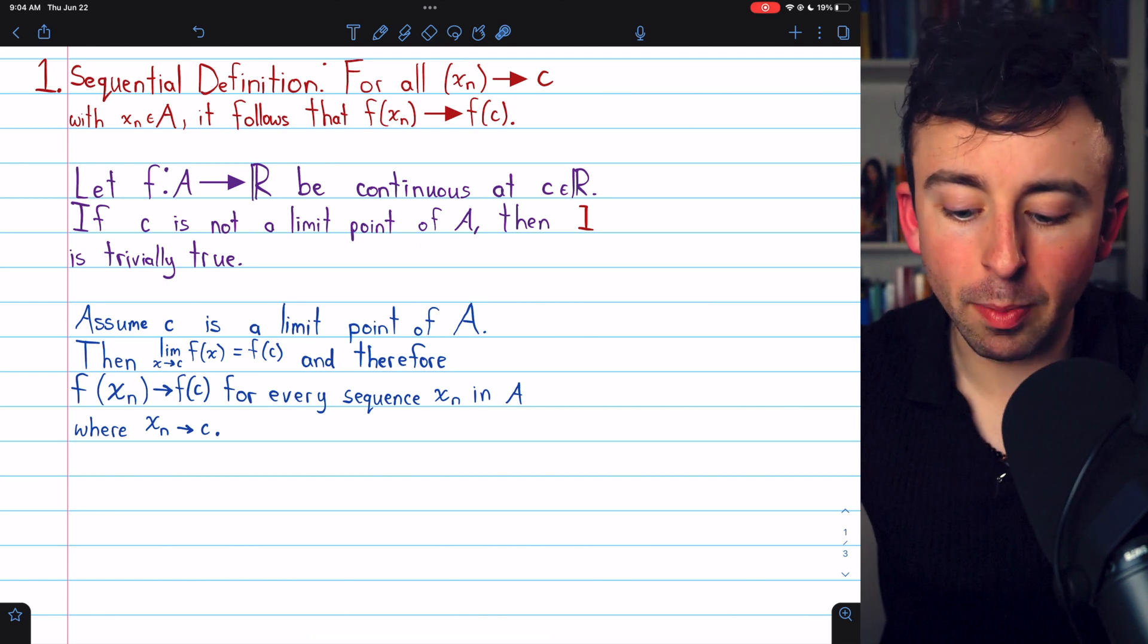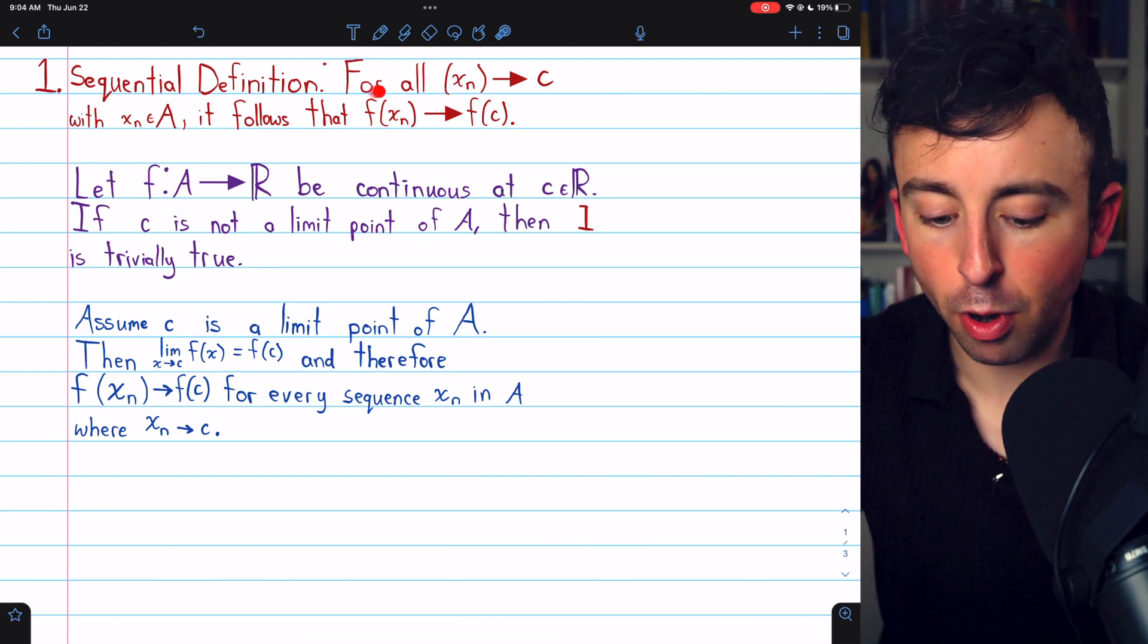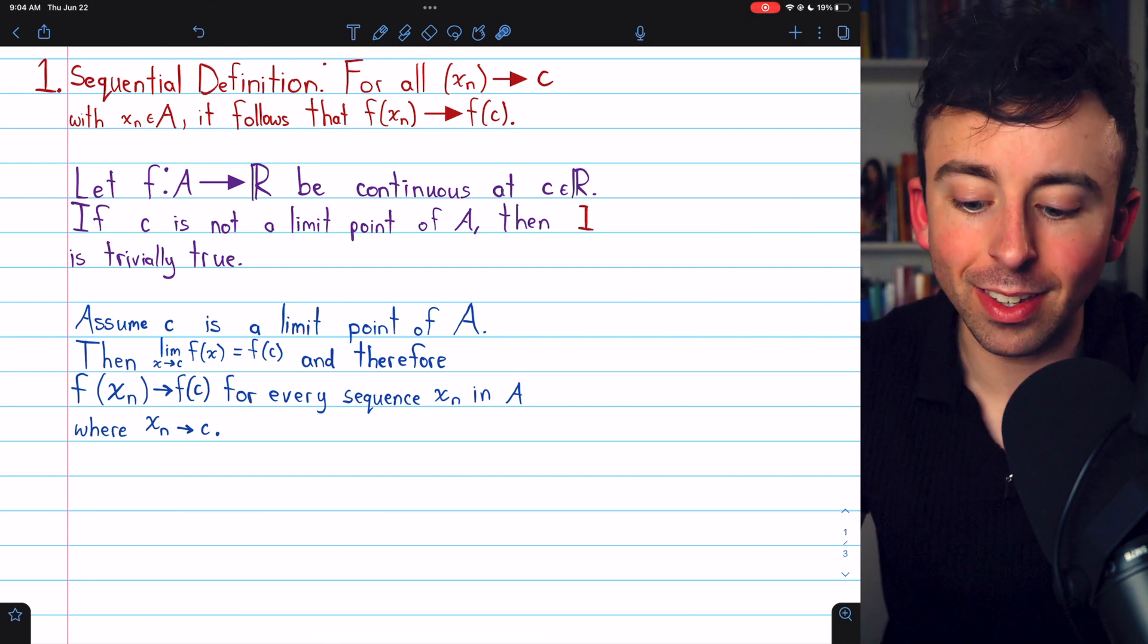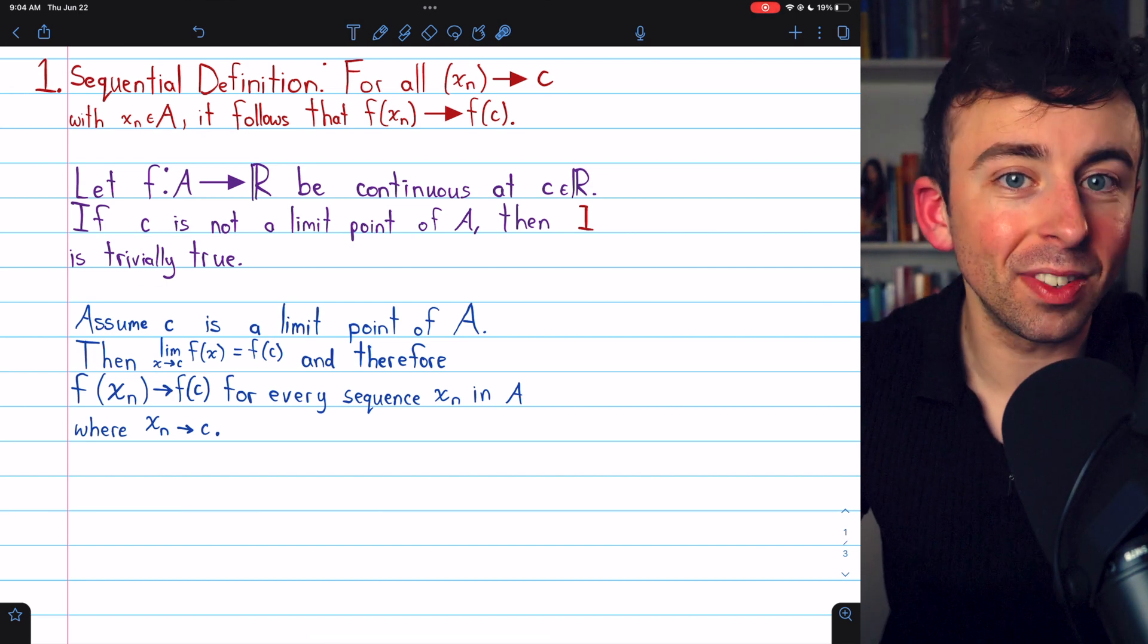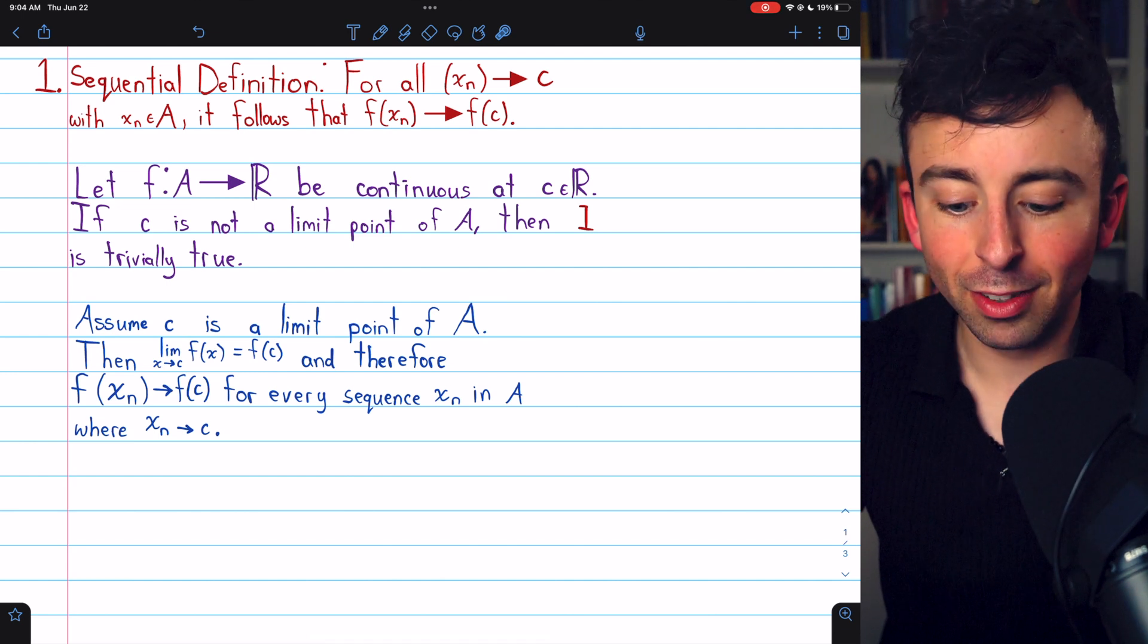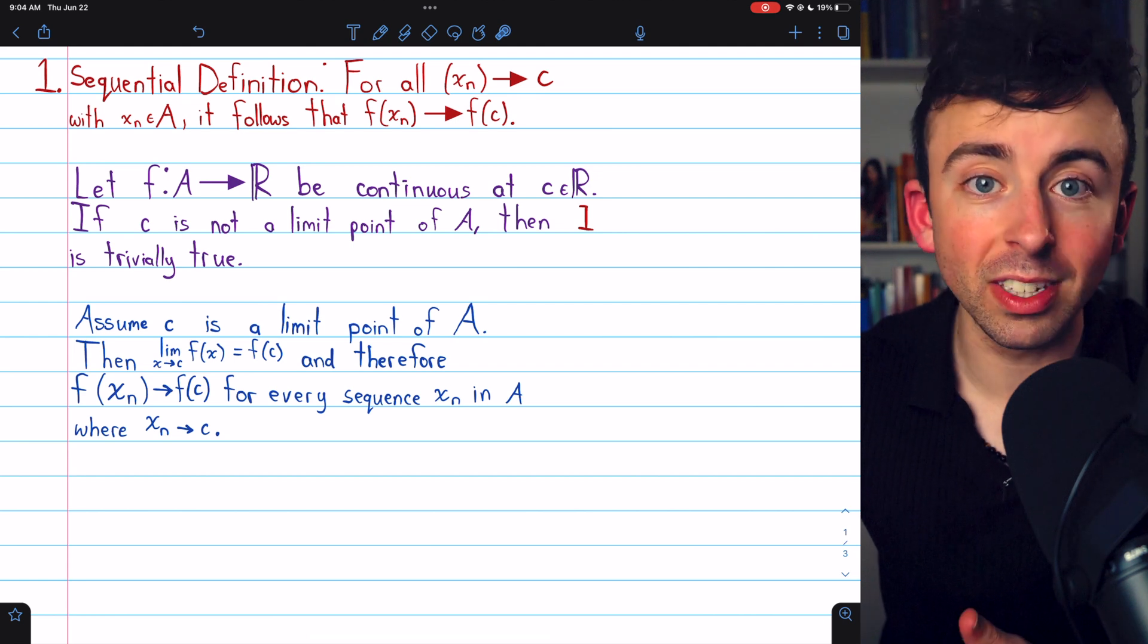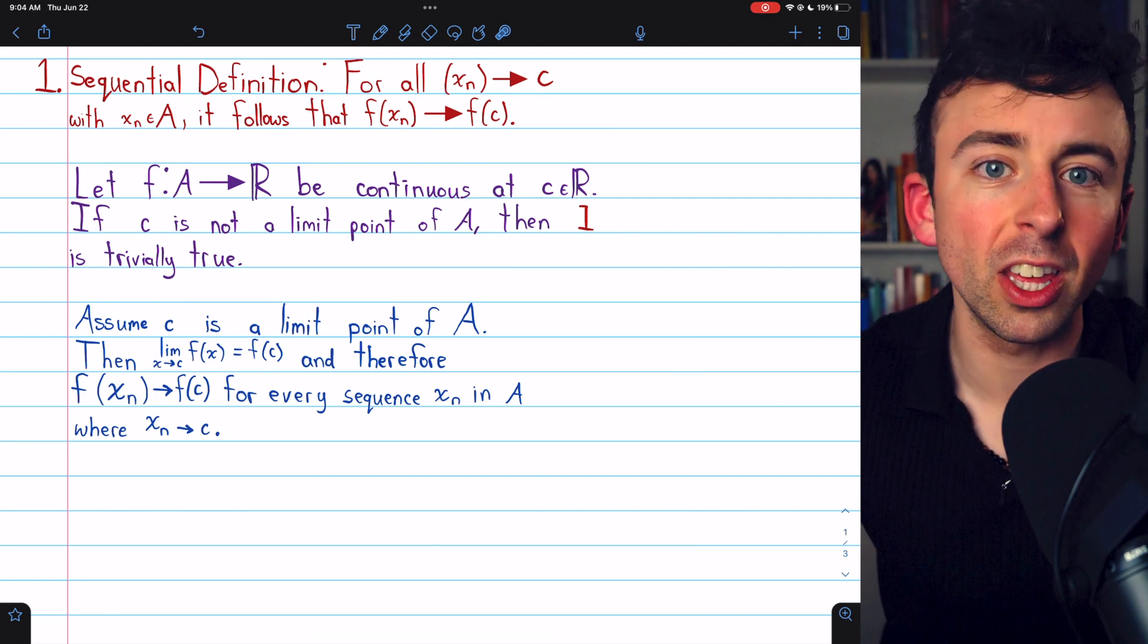Now, if c is not a limit point of A, then property 1 is trivially true because there can't be a sequence converging to c if c isn't a limit point of the domain. So, the for all sequences converging to c would apply to no sequences whatsoever, so it would be vacuously true.